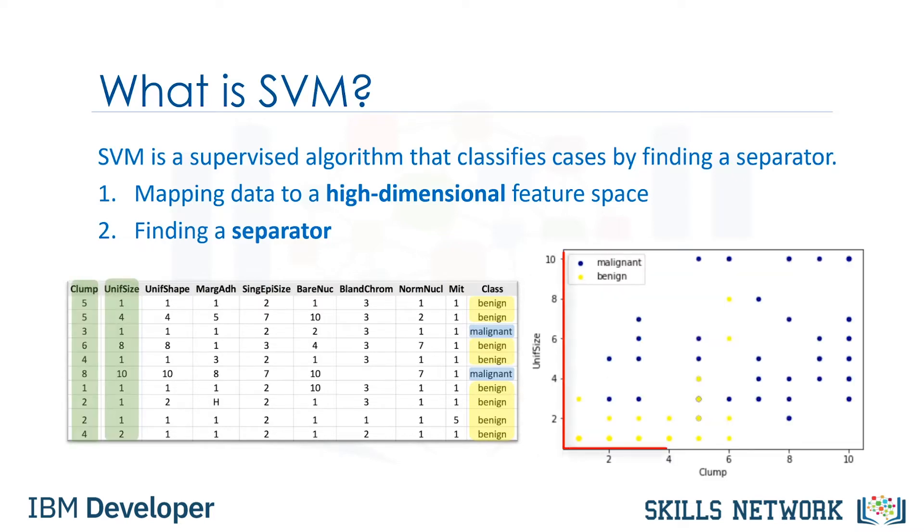For example, consider the following figure, which shows the distribution of a small set of cells only based on their unit size and clump thickness. As you can see, the data points fall into two different categories. It represents a linearly non-separable data set. The two categories can be separated with a curve, but not a line. That is, it represents a linearly non-separable data set, which is the case for most real-world data sets.